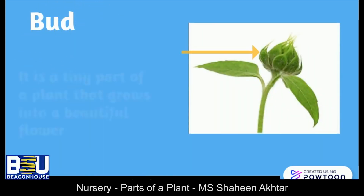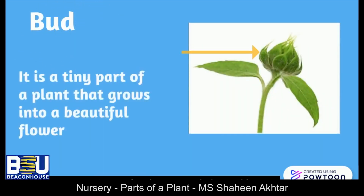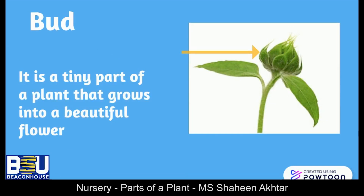Bud — it is a tiny part of a plant that grows into a beautiful flower.